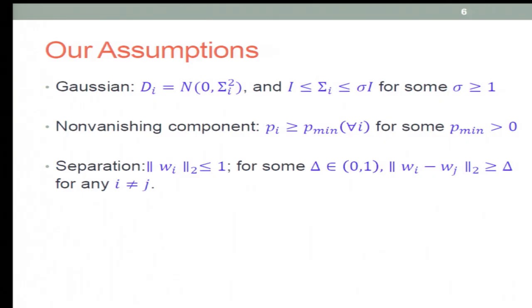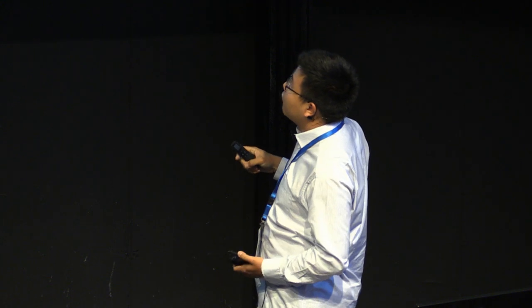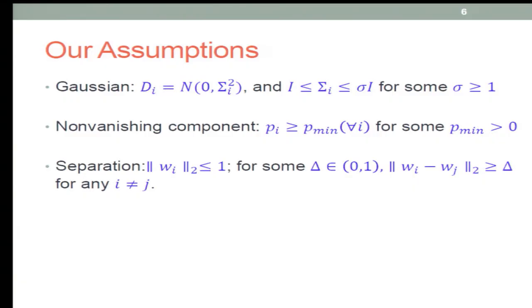There are assumptions in their paper. First, the data should be Gaussian and the covariances should be well-conditioned. Second, the probability of each component should be lower bounded from below. Third assumption is that the mixture should be well-separated.